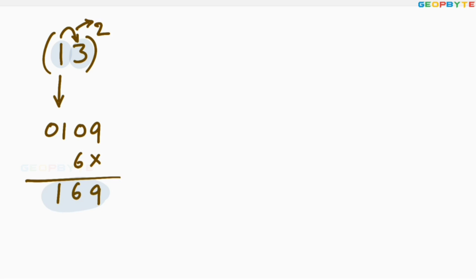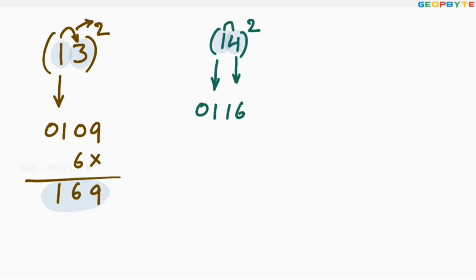Similarly, let us go further. 14 square: first write 1 square — 01. 4 square is 16. Then multiply 1 with 4: 1 into 4 is 4, 4 into 2 equals 8. Leave the first space, write 8. Add these two values: 6, 8 plus 1 is 9, 1. So 14 square is equal to 196.